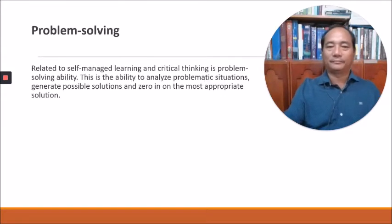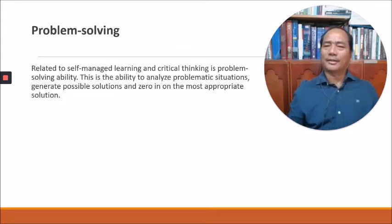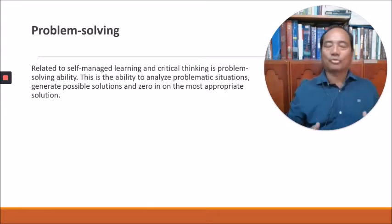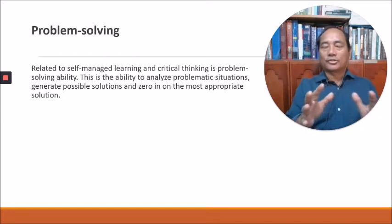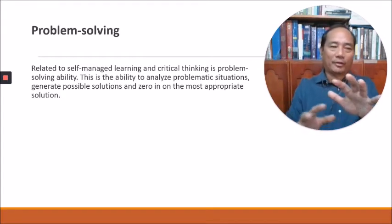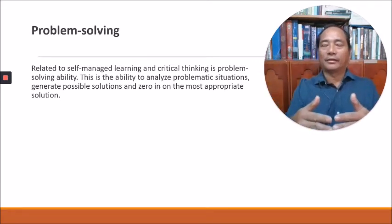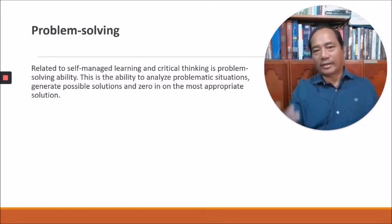The third is problem-solving capability. Related to self-managed learning and critical thinking, this is the ability of the student to analyze problematic situations, generate possible solutions, and zero in on the most appropriate solution. Problem-solving ability involves two forms of thinking. The first is divergent thinking, where the mind of the student diverges along different paths, thinking of different possible solutions. The second is convergent thinking, where the mind converges and zeroes in on the most appropriate solution among those generated.